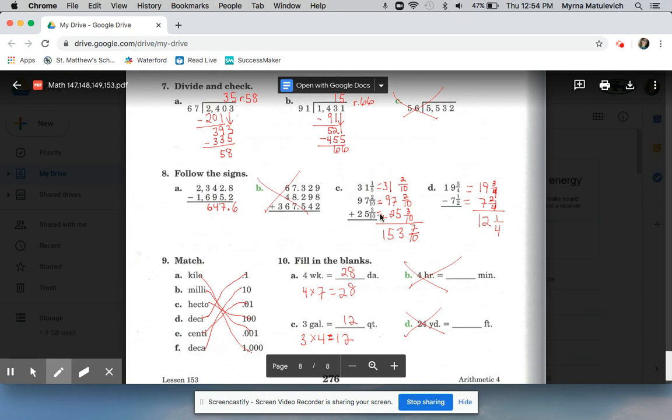Remember for C and D, you had to find common denominators first. This one will subtract, and then these conversions: seven days in a week, four times seven is 28; four quarts in a gallon, three times four is 12; kilo is a thousand, milli is a thousand, hecto is a hundred, deci is a tenth 1/10, centi is 1/100, and deca is 10.